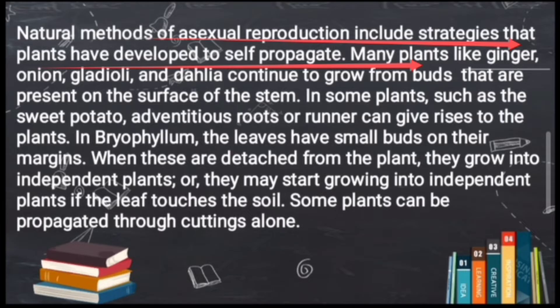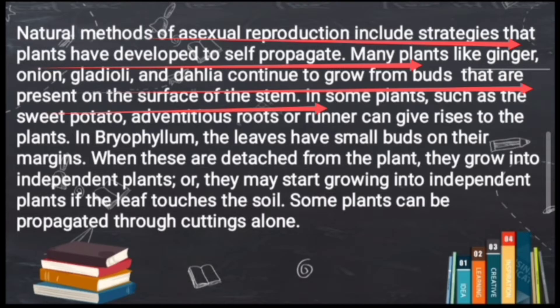Natural methods of asexual reproduction — we don't need to do anything externally. Like ginger, onion, gladioli, and dahlia — these continue to grow from buds that are present on the surface of the stem. So plants grow from the buds present on their stems.